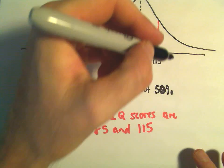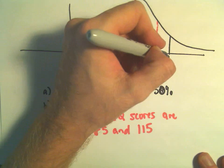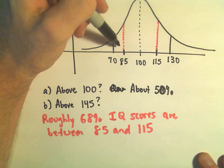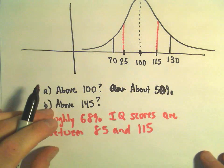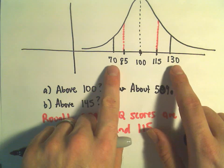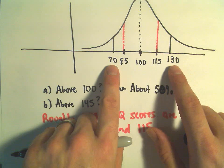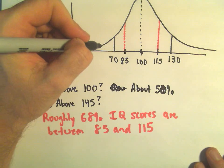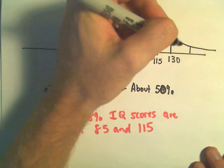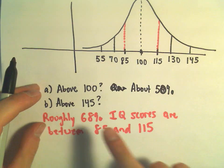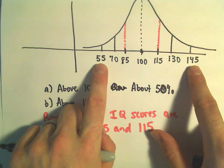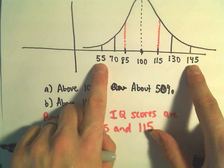If we go two standard deviations away, I add another 15 to get 130 and subtract 15 to get 70. So 95% of IQ scores fall between 70 and 130. For three standard deviations, subtracting 15 from 70 gives 55 and adding 15 to 130 gives 145. So 99.7% of IQ scores are between 55 and 145.